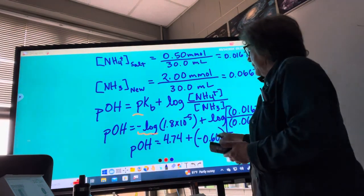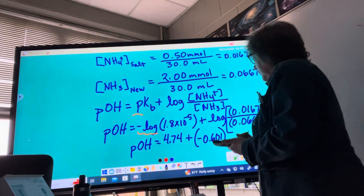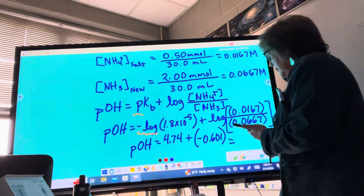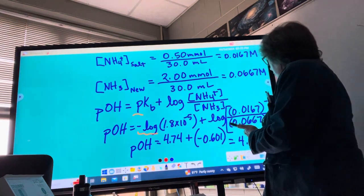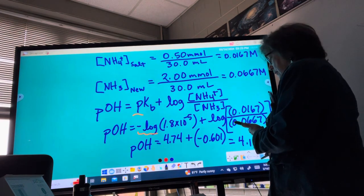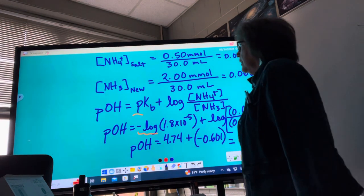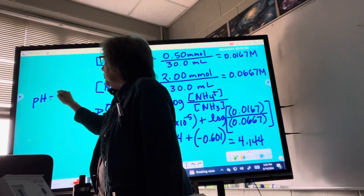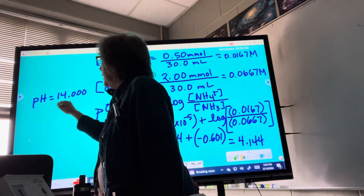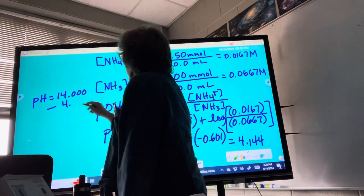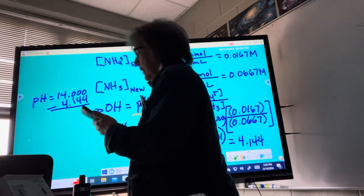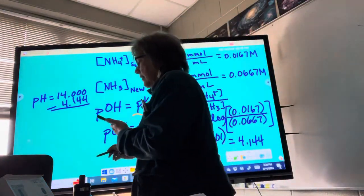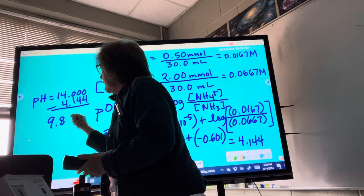And so if I say that minus this, then the POH is 4.144. And the pH, then, is 14 minus that. pH equals 14 minus 4.144. And so what do I get when I do that? 9.856.